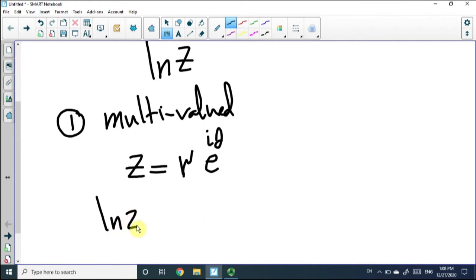ln z will be simply using the property of the logarithmic functions. This will be ln r plus ln e to the i theta. And the second term can be simplified as just i theta. So this could be written as ln r plus i theta.